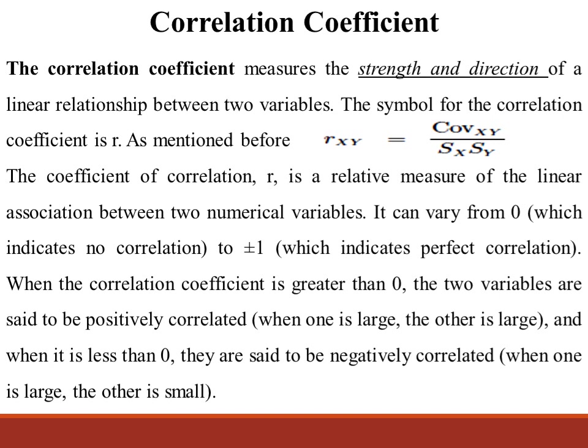When the correlation coefficient is greater than 0, the two variables are said to be positively correlated — when one is large, the other is large. And when it is less than 0, they are said to be negatively correlated — when one is large, the other is small.